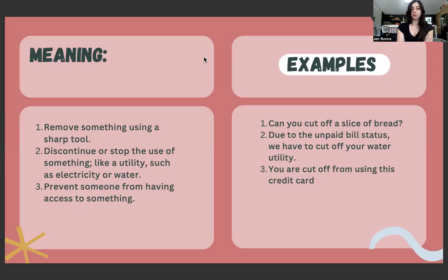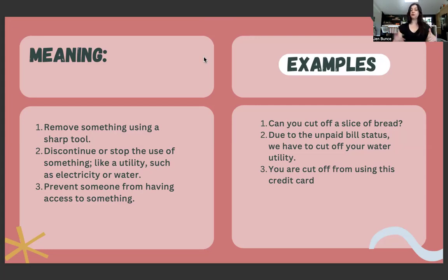Definition number three: prevent someone from having access to something. An example would be with a credit card — if you don't pay your credit card, they will cut you off. Example three: you are cut off from using this credit card. As I always say, I recommend that you create your own sentences to match each different definition. That will really help you remember how to use these new words and phrases. Because if you don't use it, you lose it.